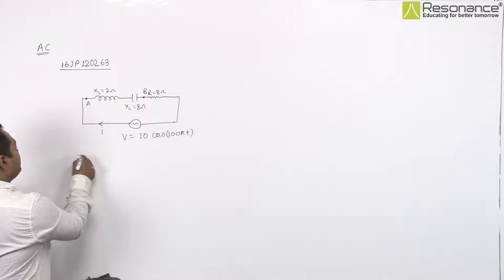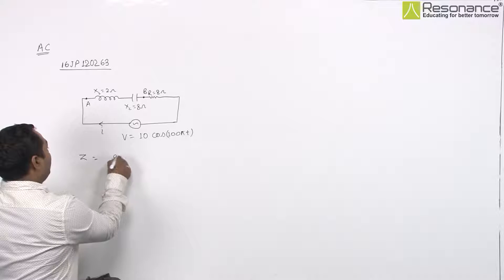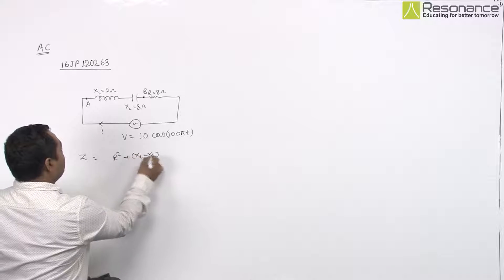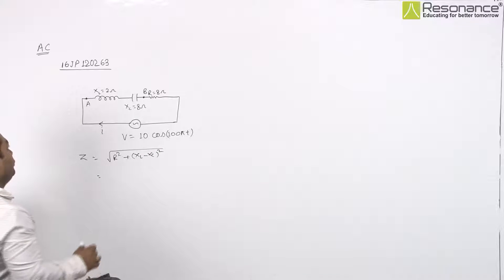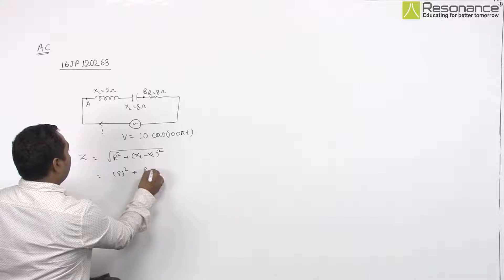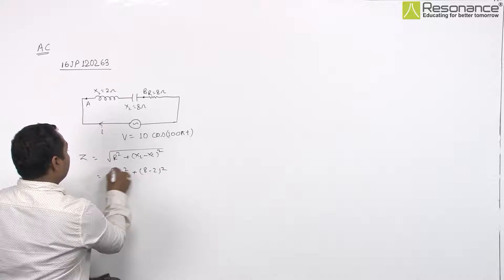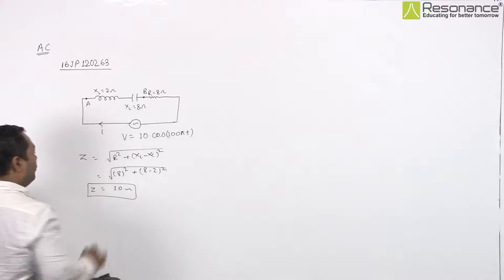You see, impedance of this circuit Z is square root of R squared plus XL minus XC squared. So it will be square root of 8 squared plus 8 minus 2 squared. Thus, result will be Z equals 10 ohm.